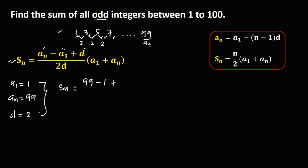Then plus d, the common difference, that's 2, then over 2 times the common difference, times 2. Then times a sub 1, that's 1, then plus a sub n, that's 99.